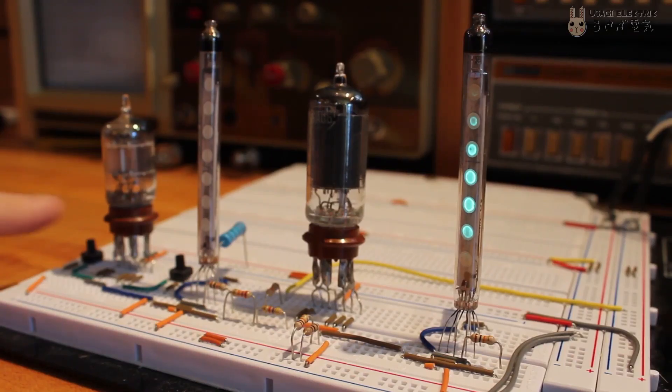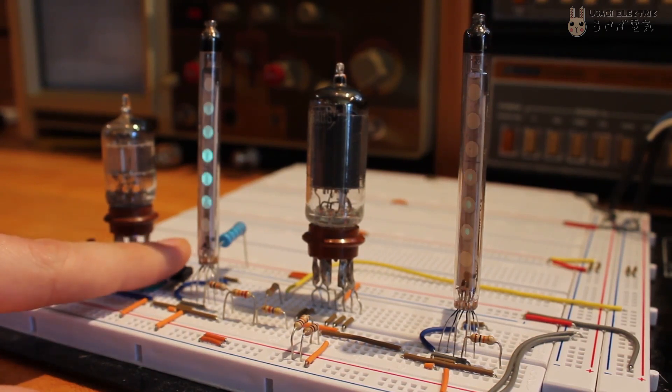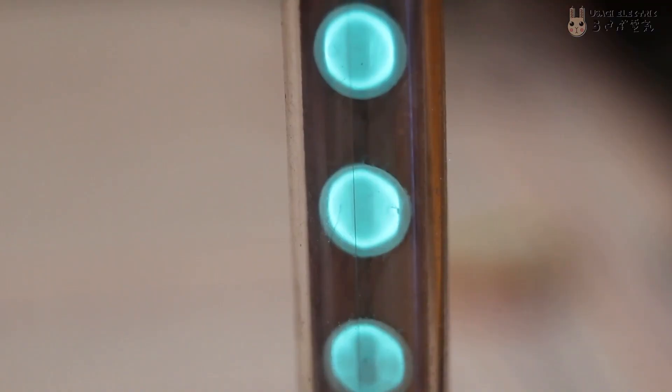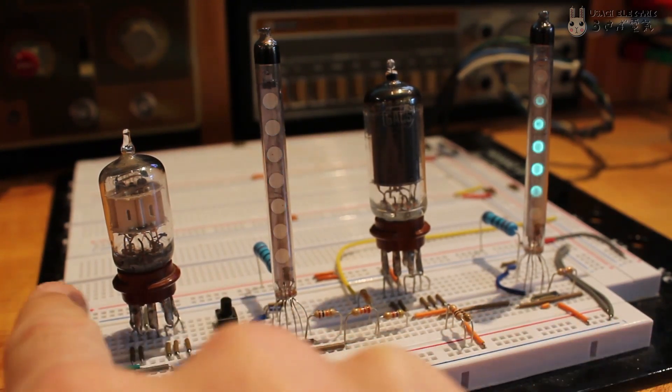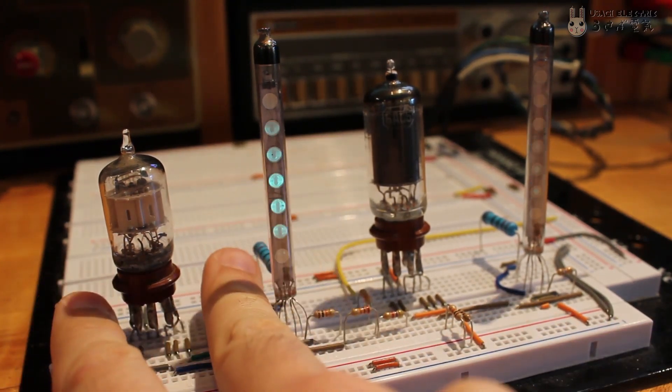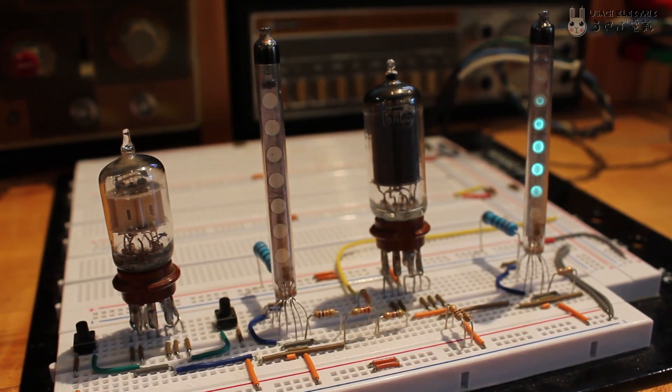Here you can see that in action. The leftmost VFD bar represents the OR gate output, and the rightmost VFD represents the NOR gate output. At rest, the NOR gate is high and the OR gate is low. When pushing one or both buttons, the OR gate goes high and the NOR gate goes low.